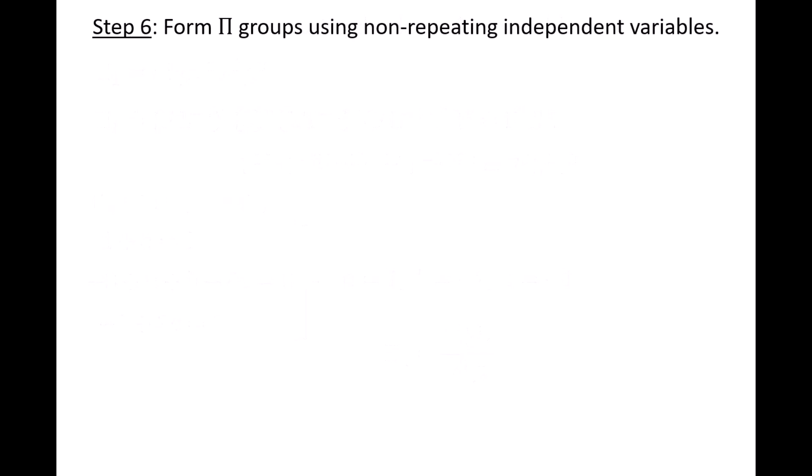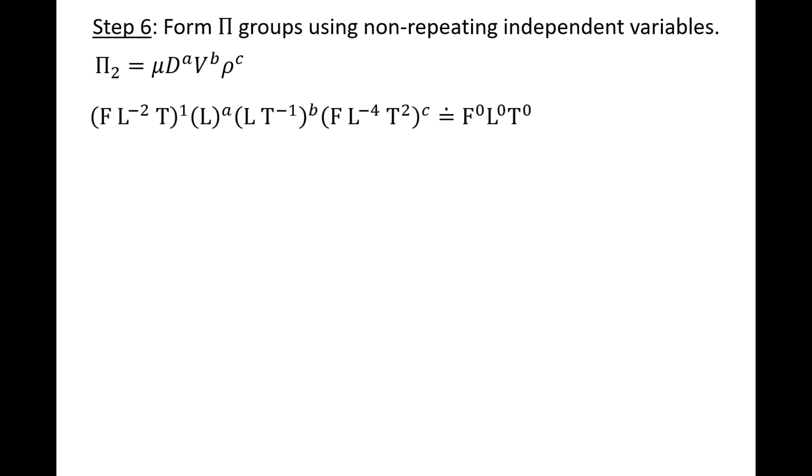In step 6, we create pi groups using the independent variables that are non-repeating. In our scenario, we only have one non-repeating independent variable left, which is the absolute viscosity mu. To find the pi group with mu, which we'll call pi 2, we multiply mu by the three repeating variables raised to an unknown power: pi 2 equals mu times d to the a, v to the b, rho to the c. We insert the FLT dimensions: mu has dimensions of force, length to the negative 2, time; d has dimensions of length; v has dimensions of length per time; and rho has dimensions of force, length to the negative 4, and time squared.